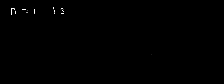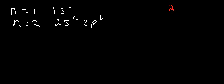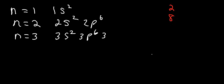Let's start with the first case. N can never be zero. If N is 1, you can have a maximum of two electrons. When N is 2, there are two sublevels, the S sublevel and the P sublevel, so you can have a maximum of eight electrons. When N is 3, there are three sublevels: 3S², 3P⁶, and the D sublevel can hold a maximum of 10, giving you a total of 18 electrons.